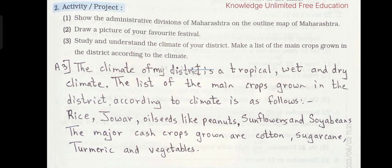Activity projects. Study and understand the climate of your district and make a list of the main crops grown in the district according to the climate. The climate of my district is a tropical wet and dry climate. The main crops grown are rice, jawar, oilseeds like peanuts, sunflowers and soya beans. The major cash crops grown are cotton, sugar cane, turmeric and vegetables.